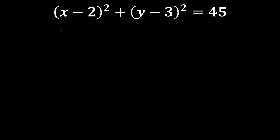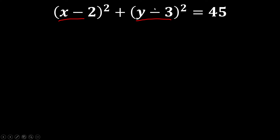To convert to the general form, all we need to do is expand — that is, square the binomials using either the FOIL method or special products. In this example, we will use special products for (x minus 2) squared and the FOIL method for (y minus 3) squared, but it depends on you which method you use for both binomials.